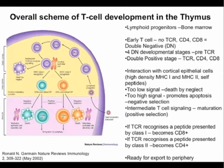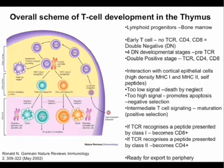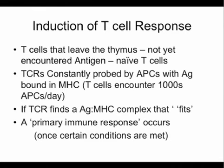If the TCR that interacts with the cortical epithelial cell recognizes MHC class 1 restricted antigen, that cell goes on to differentiate into a CD8 positive T cell. If it recognizes an antigen presented by MHC class 2, it goes on to become a CD4. There's also a lot of cytokine signaling in the thymus that's very important for T cell development. Basically, the cells that leave the thymus are naive T cells — they have not yet encountered antigen — and the cells that would respond strongly to self-antigen have all been deleted, so they shouldn't cause autoimmune reactions.